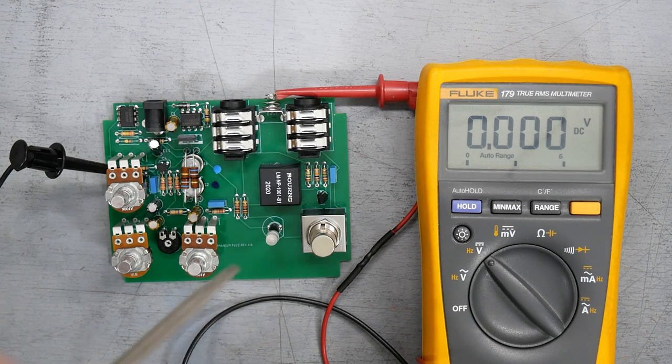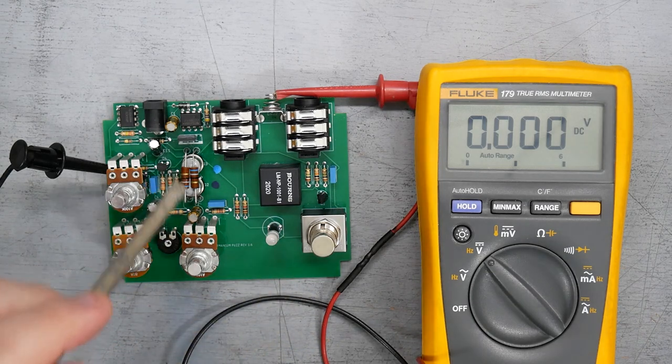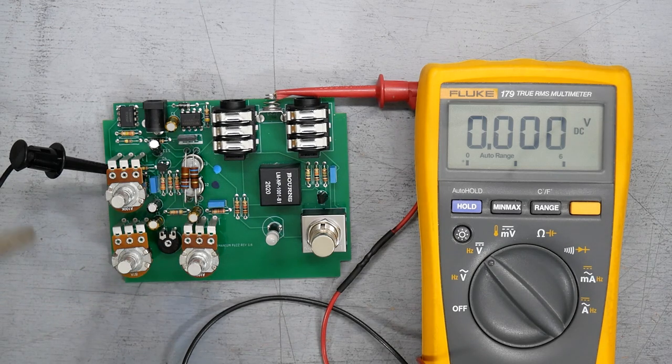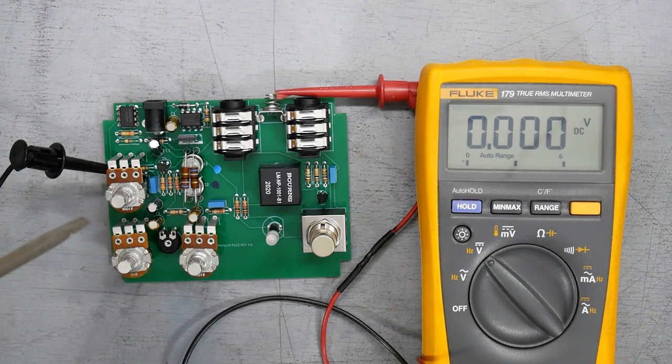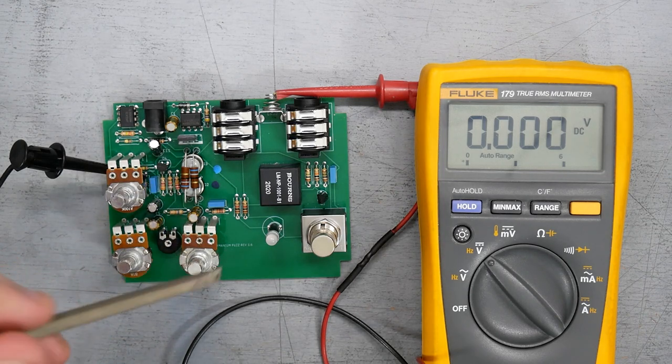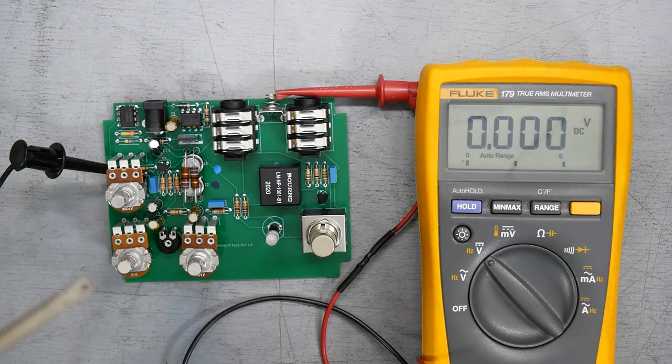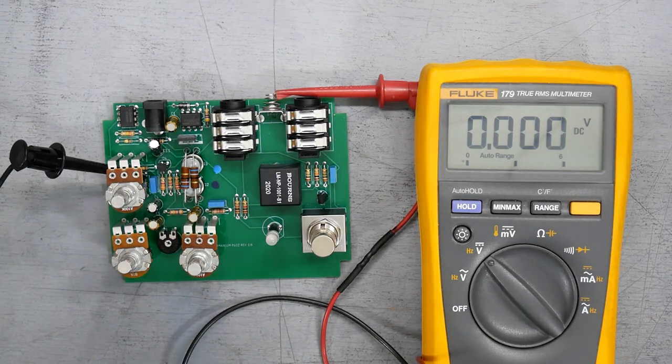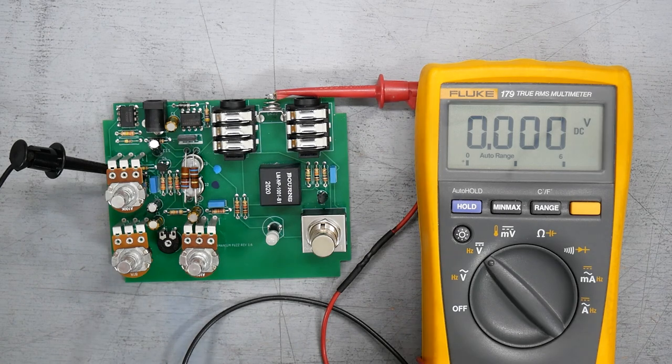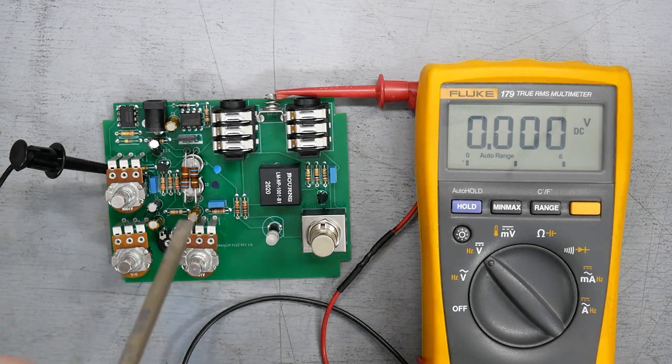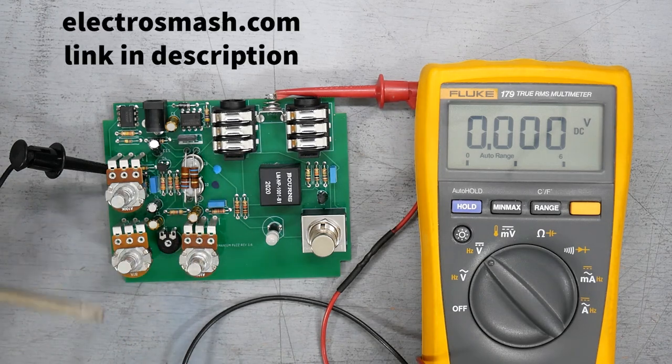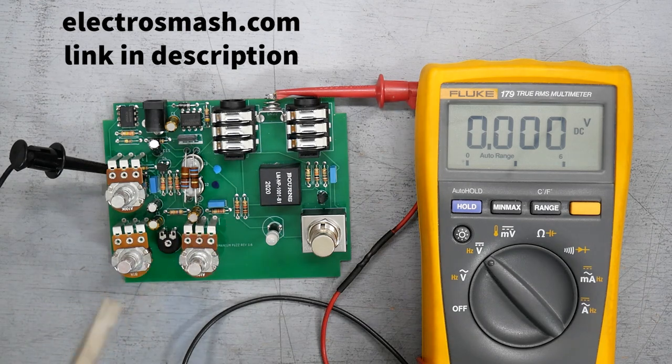I want to correct something I said earlier. I might've simplified it a little too much. It's not simply a function of the collector current increasing as temperature increases. That's true for transistors, that is the case. But the fuzz face is fairly complicated for DC analysis because the base of Q3 or Q2 in a fuzz face, Q3 in this case, is tied to the collector of Q2. And so there's some current stealing happening there. And I'm not technically gifted enough to explain it well. So I recommend if you're interested in that, head over to electrosmash.com and check out their article on the fuzz face. It is very informative and good.